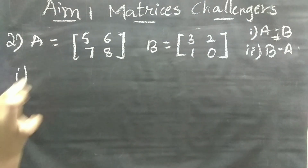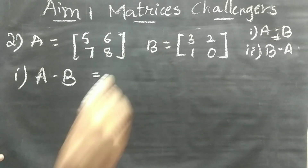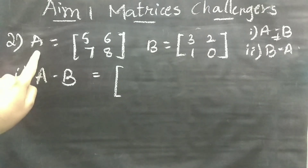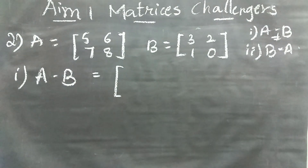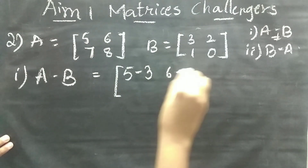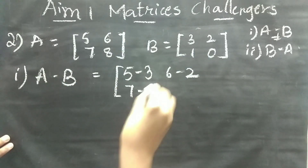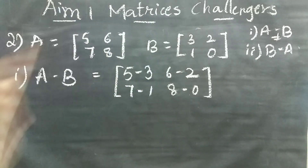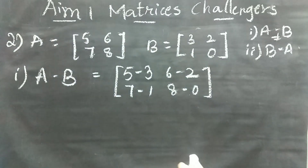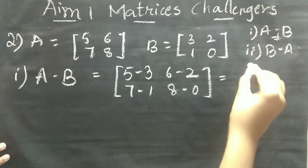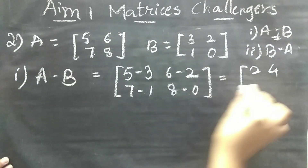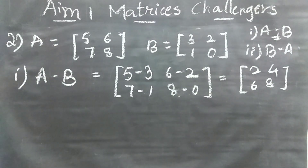Let's start with the first subdivision, A minus B. We put the square brackets and subtract corresponding elements: 5 minus 3, 6 minus 2, 7 minus 1, and 8 minus 0. Just subtract element by element — it's very simple. So 5 minus 3 is 2, 6 minus 2 is 4, 7 minus 1 is 6, and 8 minus 0 is 8. First part is done.